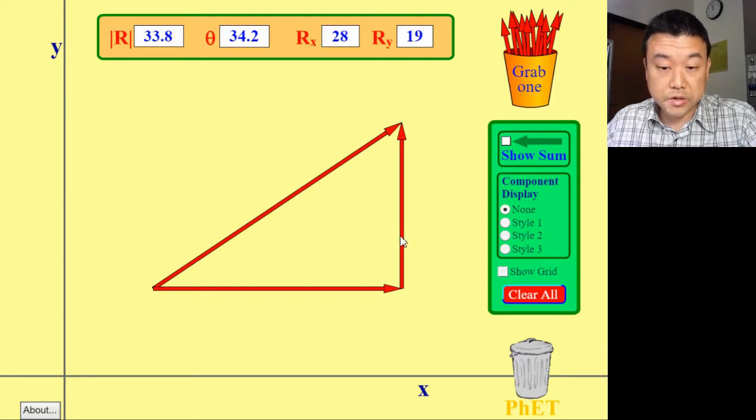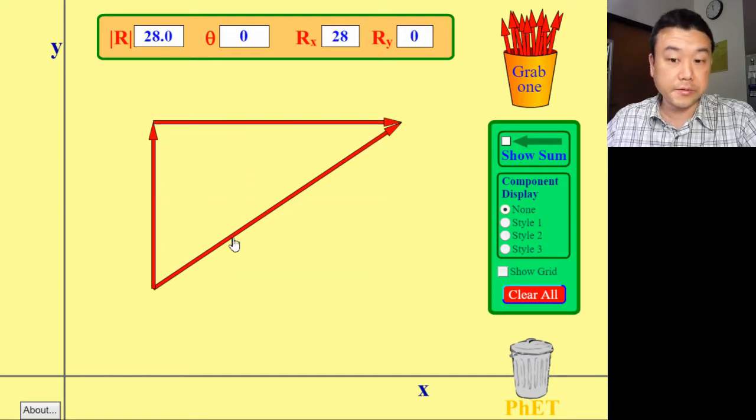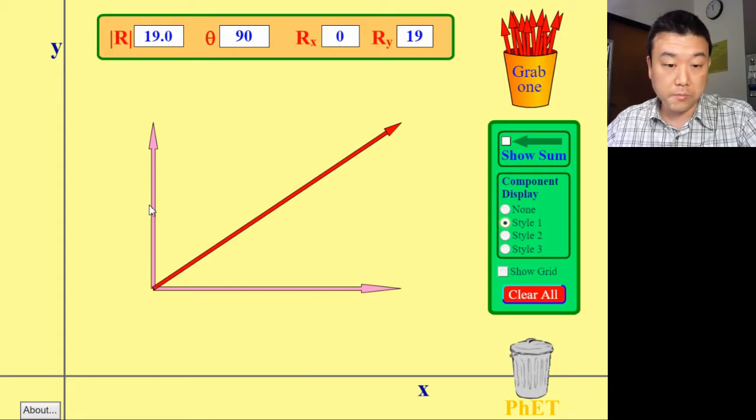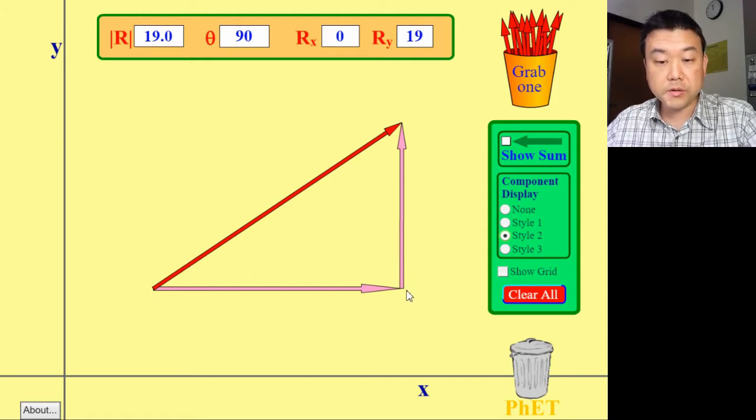And these vector additions, you can swap the orders, and you see that you get the same result if you add these two arrows in any order. And actually, you can use the component display here to show how those vector components appear. This is one style of representing components, and this makes it clear as to how this whole vector is broken into two x and y components. This is another way of representing it. It shows more clearly that the x-component plus y-component gives you this whole vector.